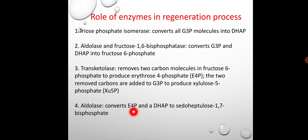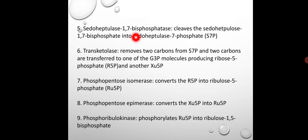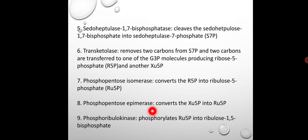The next enzyme, aldolase, converts erythrose 4-phosphate and DHAP to sedoheptulose 1,7-bisphosphate — which is an intermediate in the PP pathway. Then sedoheptulose 1,7-bisphosphatase cleaves sedoheptulose 1,7-bisphosphate into S7P. Next, transketolase, phosphopentose isomerase, and phosphofructokinase are involved in further regeneration of RUBP. Finally, phosphoribulokinase phosphorylates ribulose 5-phosphate into ribulose 1,5-bisphosphate, and our RUBP is regenerated with the help of these enzymes.